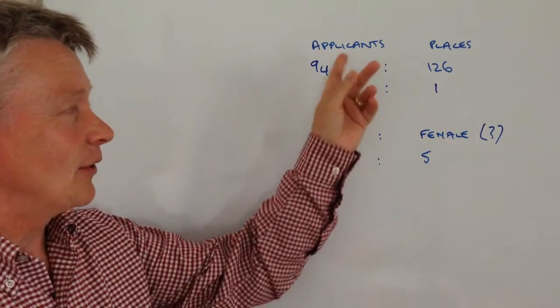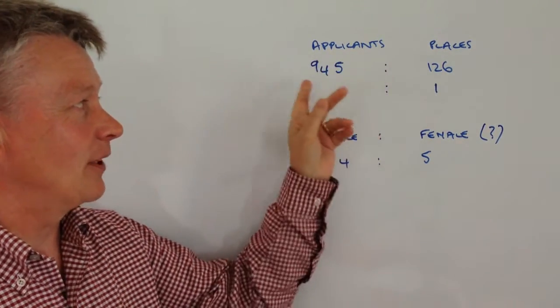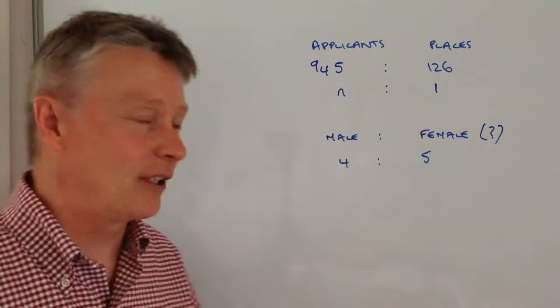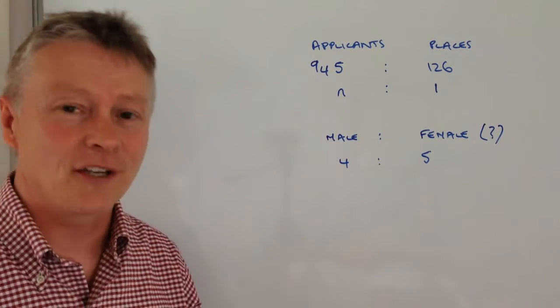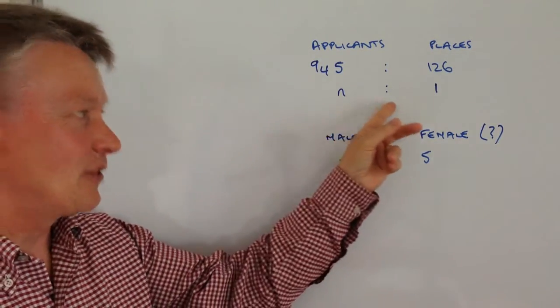Basically, you've got university applicants. There's 945 applicants for 126 places. What it asks you to do is to write the ratio in the form N to 1.